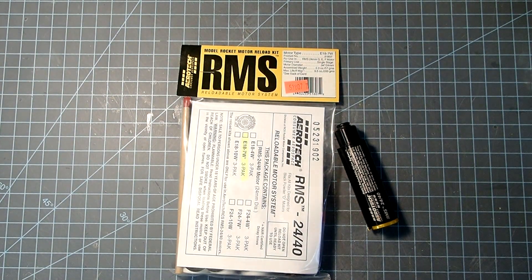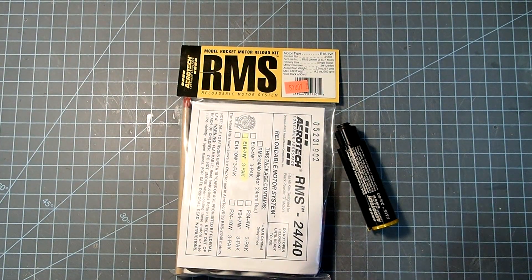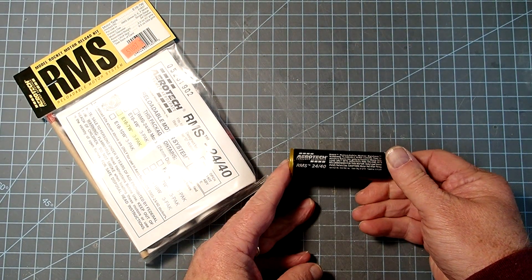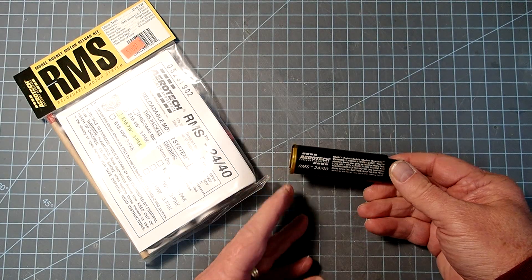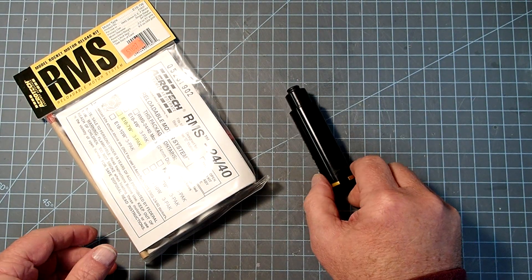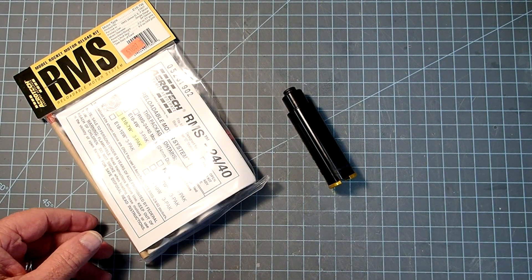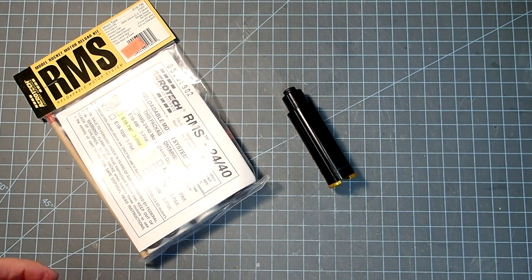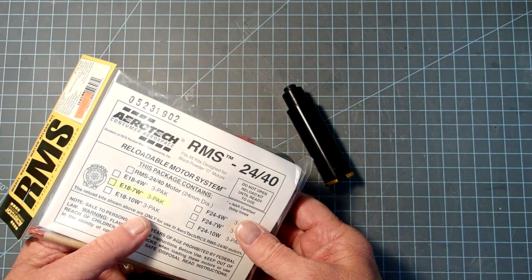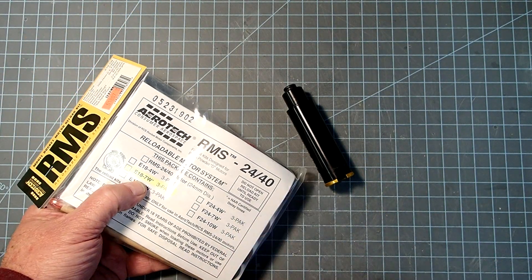Hello everyone, I'm Dave Thomas, and today I am preparing an Aerotech RMS 2440 motor casing with a reload. They have quite a few that go to this particular case, anywhere from E to small-F engines, and today I'm going to be loading the E18-7.